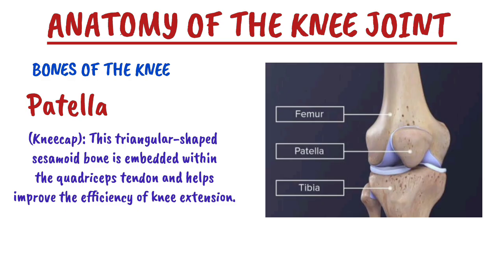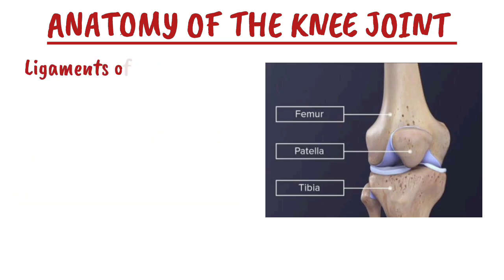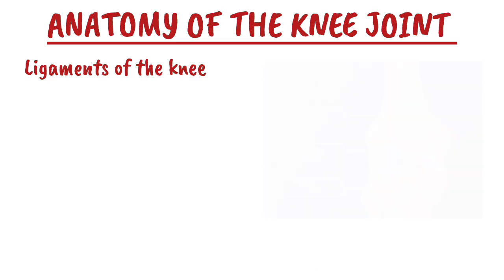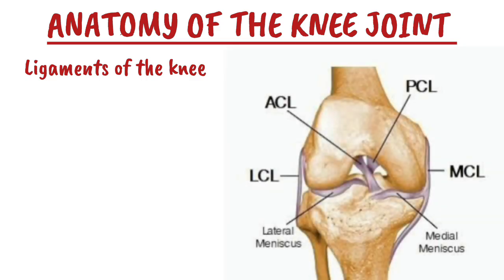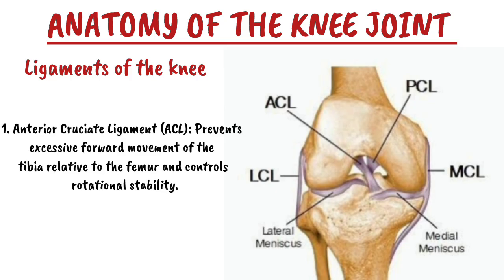Now let's talk about the ligaments of the knee. The ligaments of the knee are tough bands of connective tissue that stabilize the knee joint. There are four main ligaments. Number one is the anterior cruciate ligament, also called the ACL. It helps to prevent excessive movement of the tibia relative to the femur and controls rotational stability.